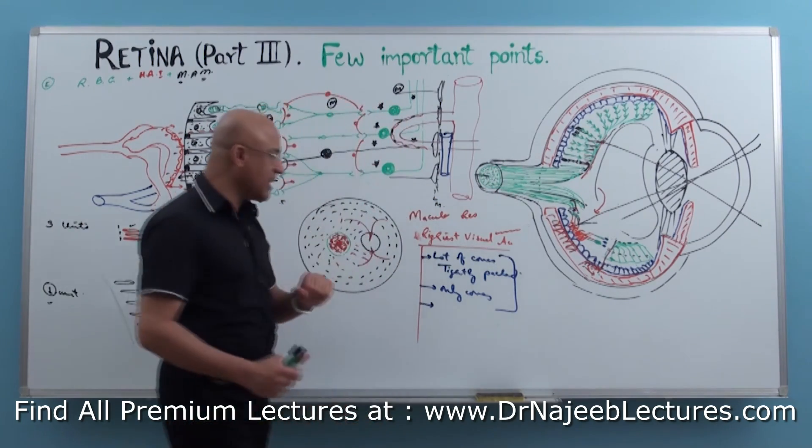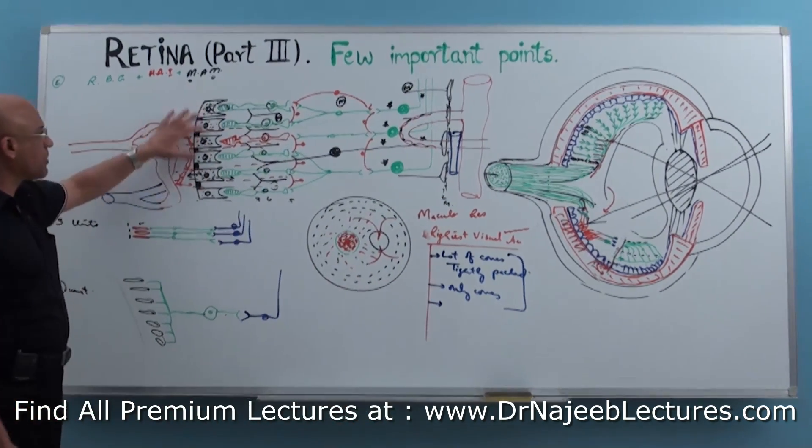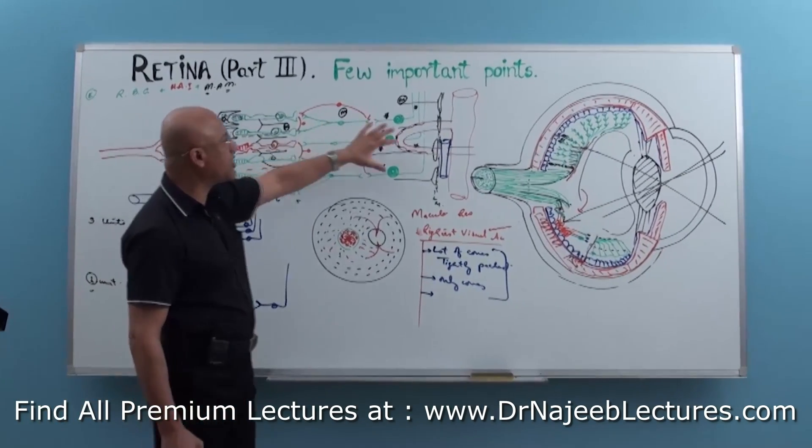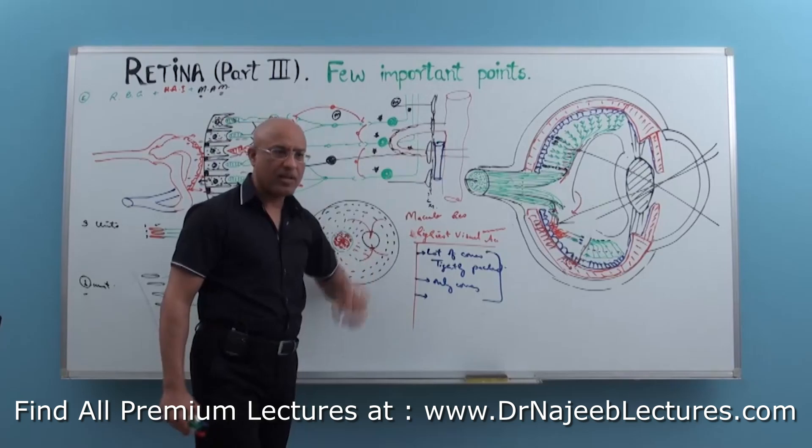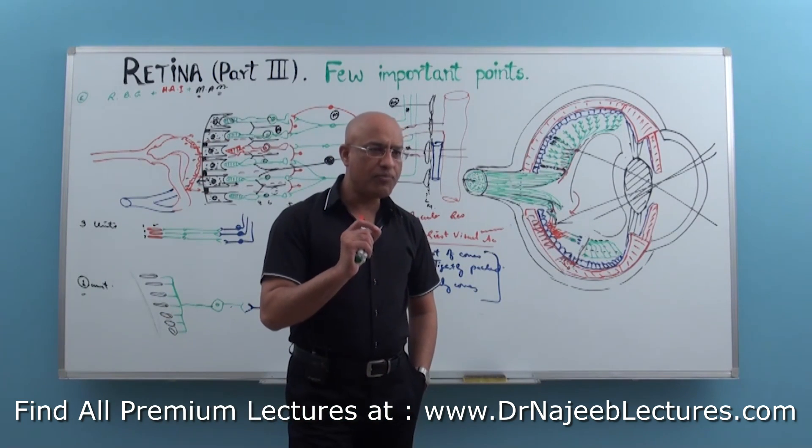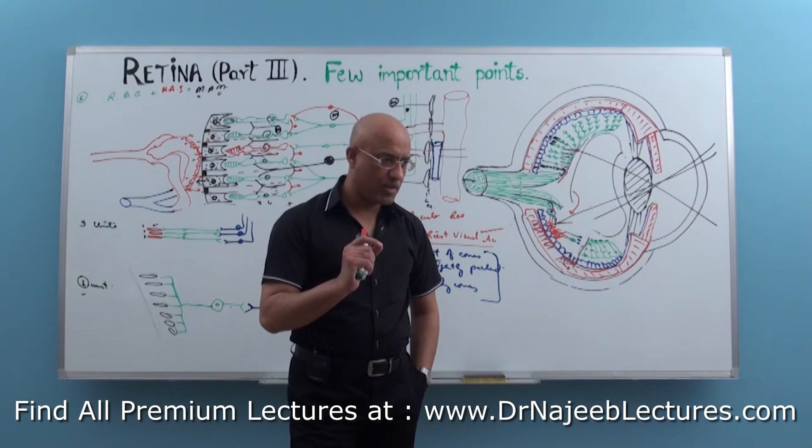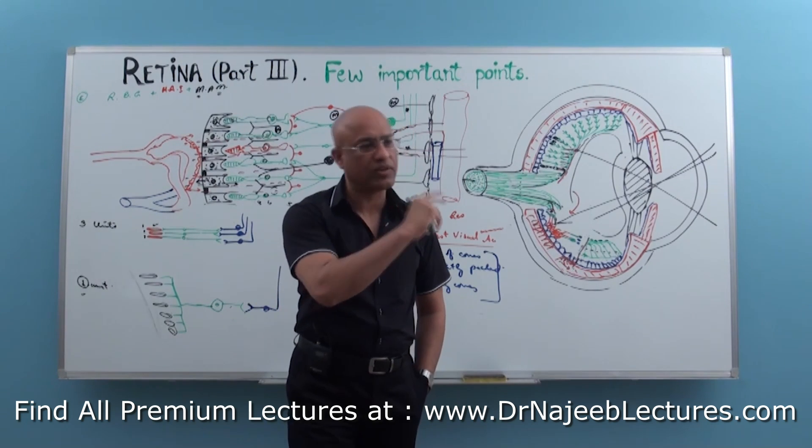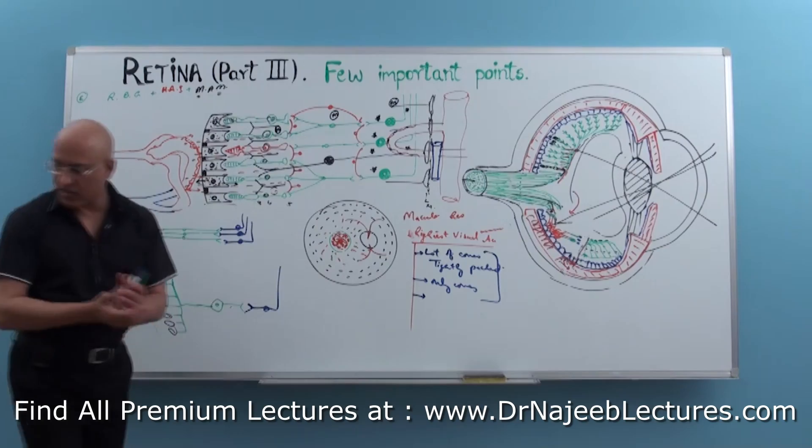After this we come to one more area, the pigment epithelium. We know about rods and cones, bipolar cells, ganglion cells, and nerve fibers. Now I want to specially focus on the nerve fibers from the ganglion cells - their axons and what are their final destinations in the central nervous system. Let's come to that.